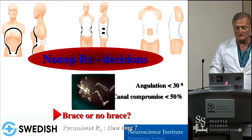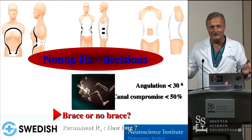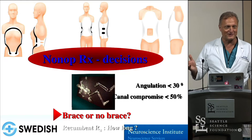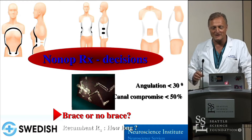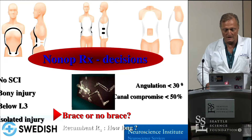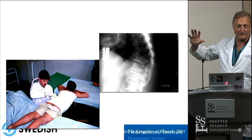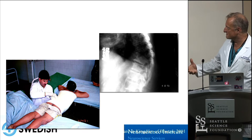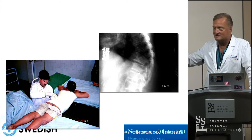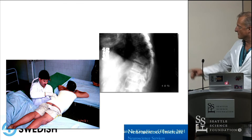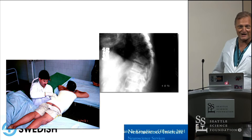Don't operate on all fractures. In my home country of Germany, doing surgery for thoracolumbar fractures has become second nature — almost every fracture gets surgery, which is sadly a perversion of 'AO as always operate,' and is not supported by literature. No spinal cord injury, bony injuries, or injuries below L3 can usually be treated non-operatively. I love casts. One of the most powerful tools for neurologically intact patients is a hyperextension cast — this works and is very effective.